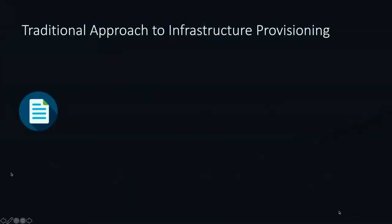You've probably seen something along these lines — the traditional approach to infrastructure provisioning today, which is still very common. A project comes in, we've got to make a change to some infrastructure. We might write down that code — maybe we take a show run, edit a switched virtual interface configuration, add an IP address or add a new one. Then we log into switches and routers along the way and implement the change, maybe update routing.